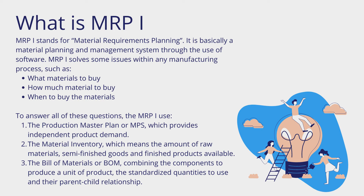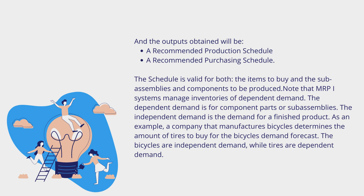To answer all these questions, MRP-1 uses: (1) the Production Master Plan, or MPS, which provides independent product demand; (2) the Material Inventory, which means the amount of raw materials, semi-finished goods, and finished products available; and (3) the Bill of Materials, or BOM, combining the components to produce a unit of product, the standardized quantities to use, and their parent-child relationship. The outputs obtained will be a recommended production schedule and a recommended purchasing schedule, valid for both the items to buy and the sub-assemblies and components to be produced.